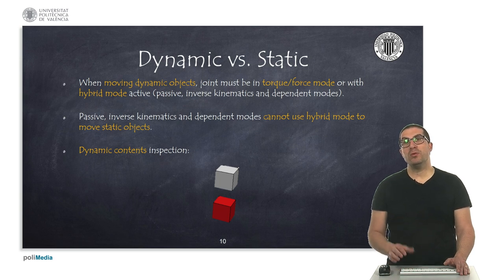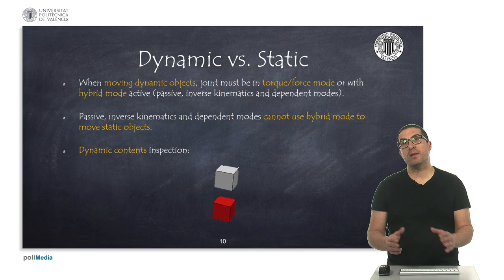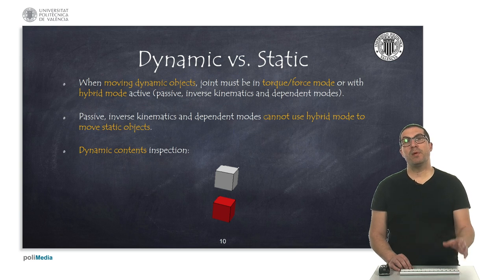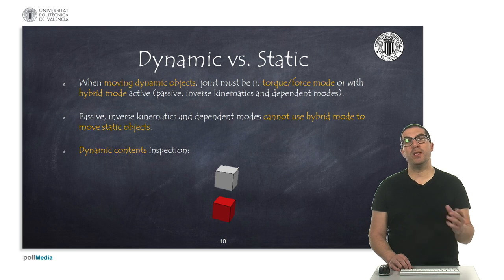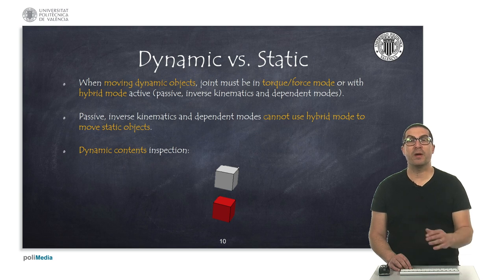And there's a tool in which we can check if an object is dynamic or static, and this will be very useful when we need to detect if we need to set the joint in a dynamic or in a static mode.